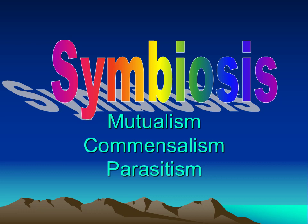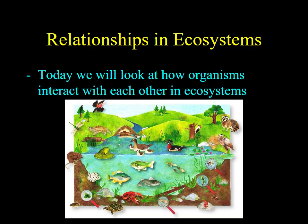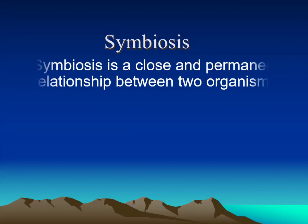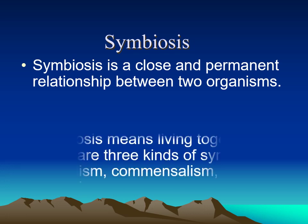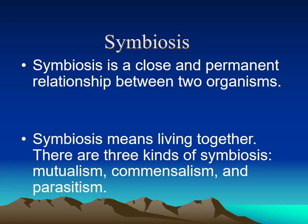Today we're going to look at how organisms interact with each other in the ecosystem — how one species interacts with another. Symbiosis is a close and permanent relationship between two organisms. Symbiosis means 'living together.' There are three kinds of symbiosis in today's lesson: mutualism, commensalism, and parasitism.